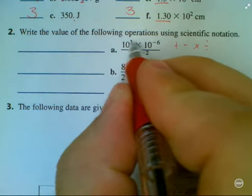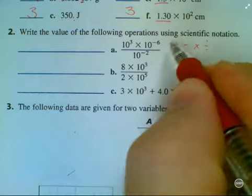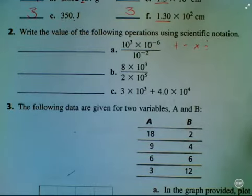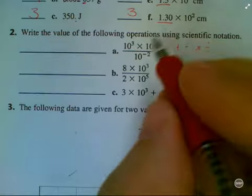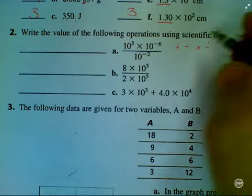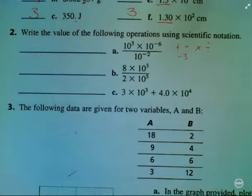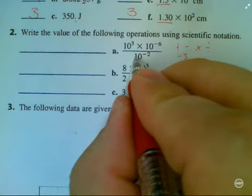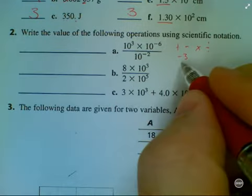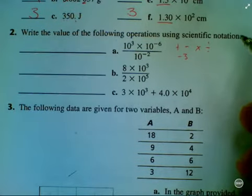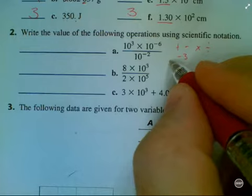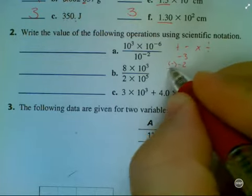Here I have 10 to the third multiplied by 10 to the minus 6. Now my rule for multiplication of exponents is to add them. So I have 3 plus minus 6, which leaves me with minus 3. But I still have this divide by 10 to the minus 2. My rule for dividing exponents is to subtract them. So I have minus negative 2.